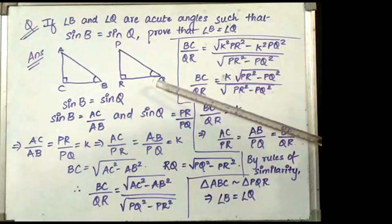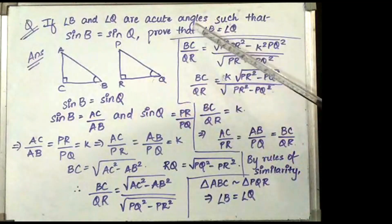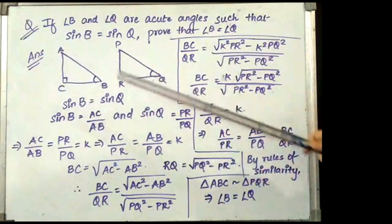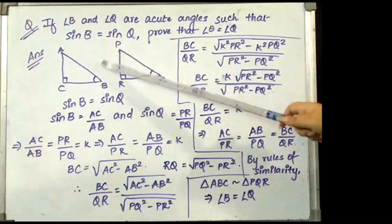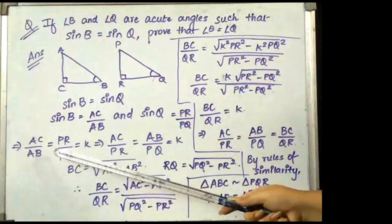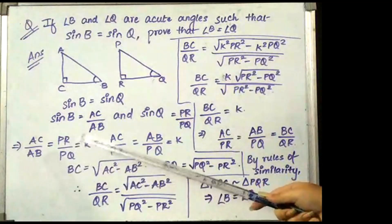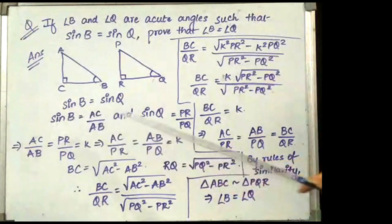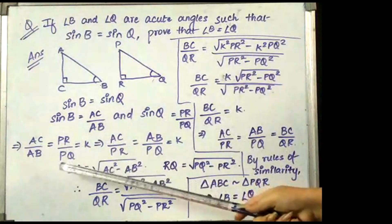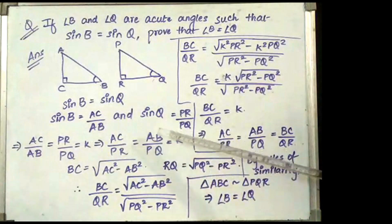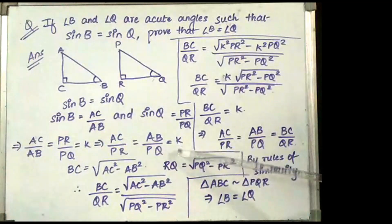Sin of angle B is equal to sin of angle Q by the question. Sin B will be AC by AB and sin Q will be PR by PQ. Now AC by AB is equal to PR by PQ, which will be equal to some constant k, because sin B equals sin Q so the ratios are equal. Rearranging the terms, AC by PR is equal to AB by PQ, which is equal to k.